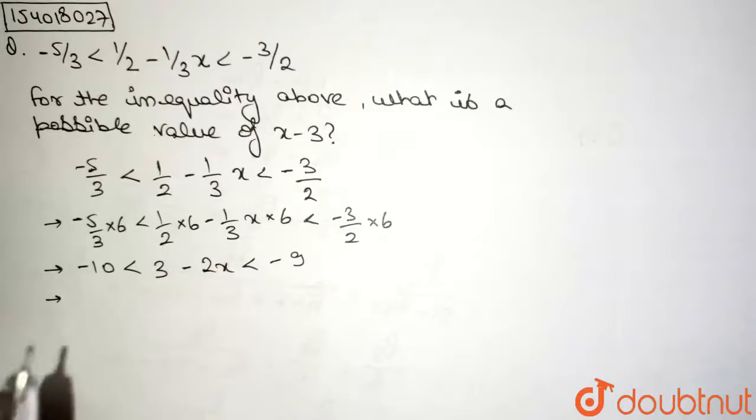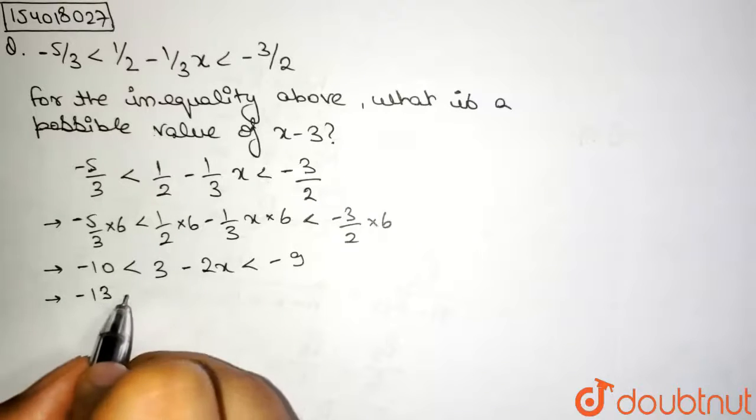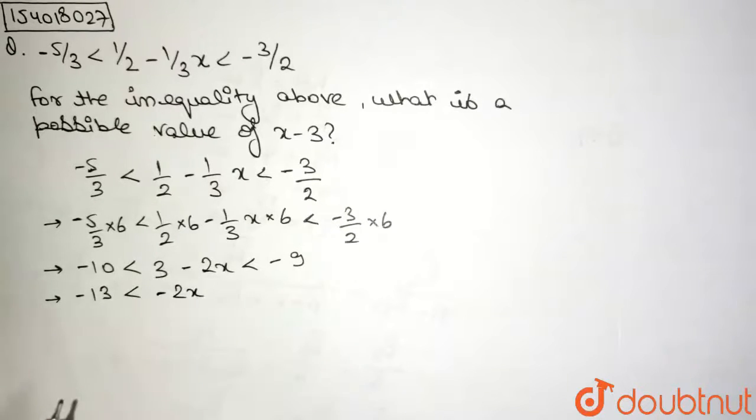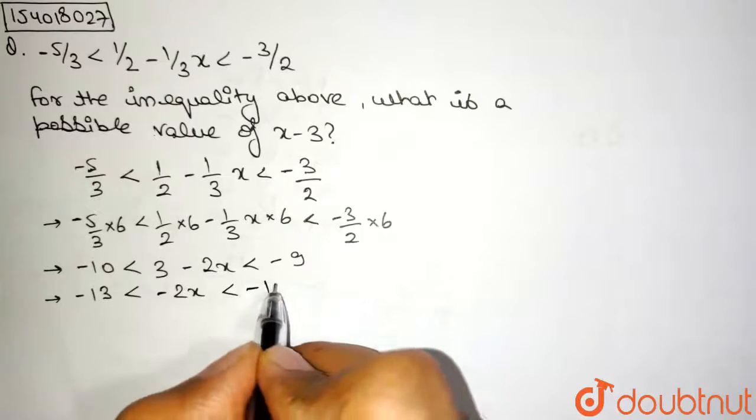What do I have now? Minus 13 is less than minus 2x. This 3 gets cancelled out, right? Because 3 minus 3 is 0. It's less than minus 12.